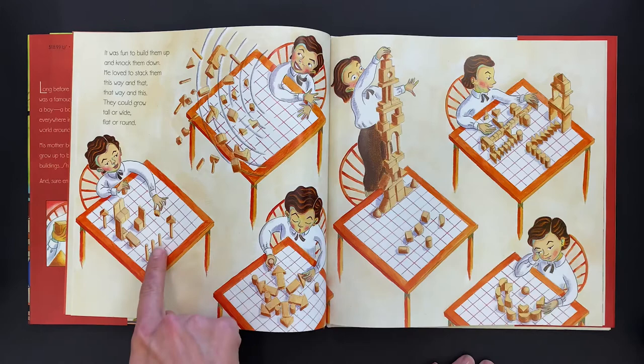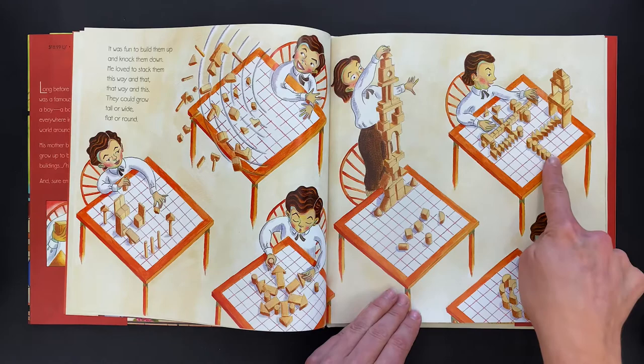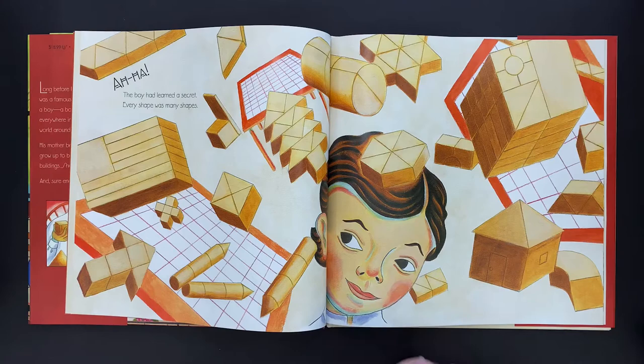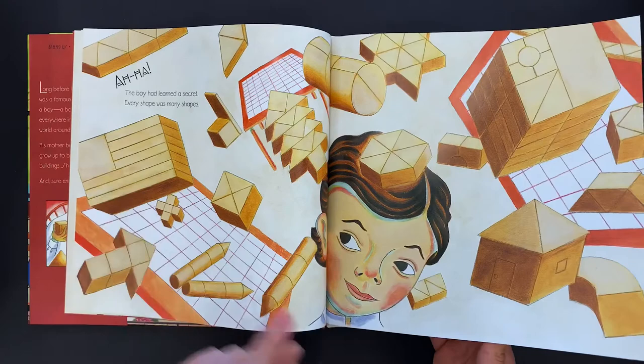Look at all the different designs he's making. Those look like chairs and a table. Look, that's a radial design. And look, I see tall skyscrapers. The boy learned a secret. Every shape was many shapes. Things are made up of many shapes. That even looks like a flag.